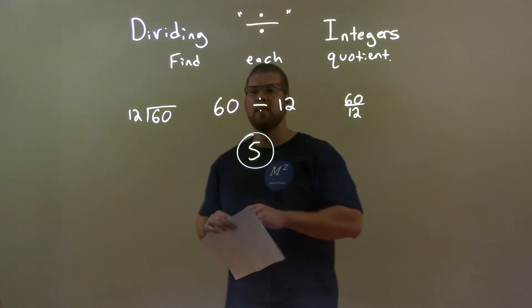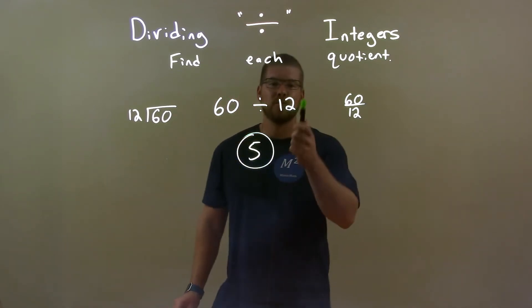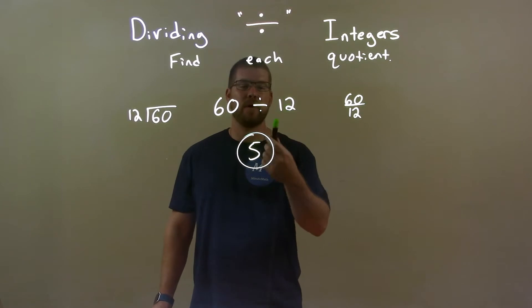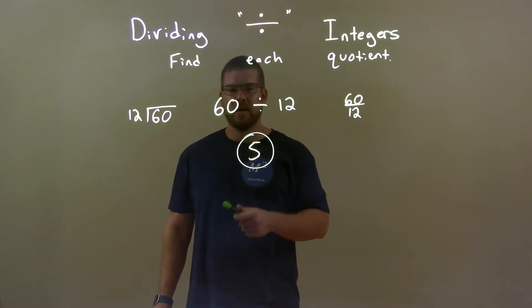So quick recap. We're given 60 divided by 12. Well, we know 12 goes into 60 five times. And a positive divided by a positive is a positive. So our final answer, pretty quick and easy here, is just positive 5.